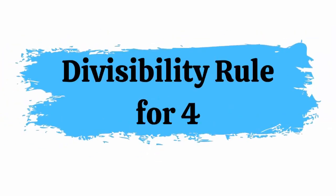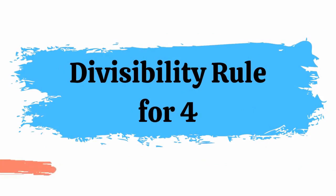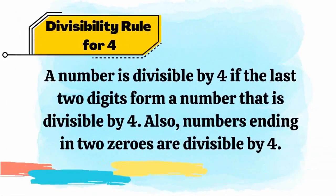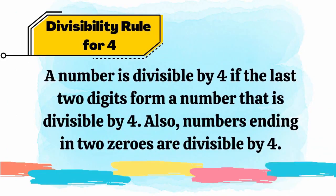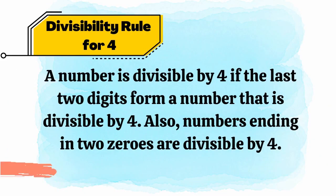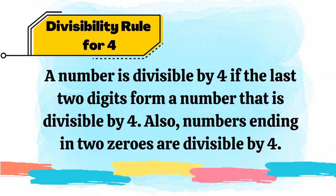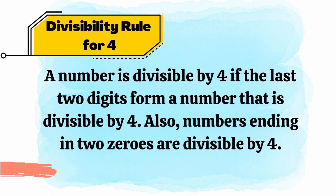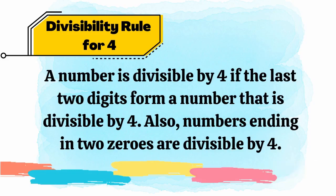Let's start with the Divisibility Rule for 4. A number is divisible by 4 if the last two digits form a number that is divisible by 4. Also, numbers ending in two zeros are divisible by 4.